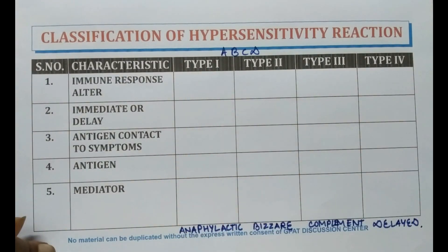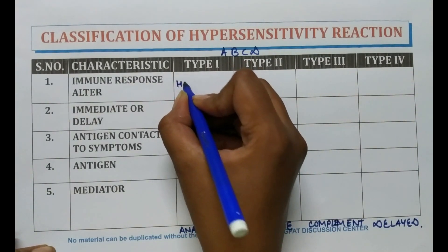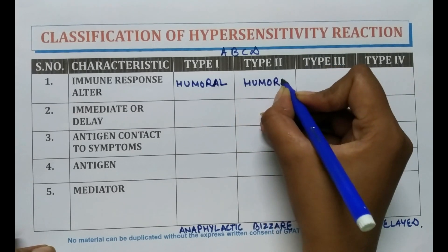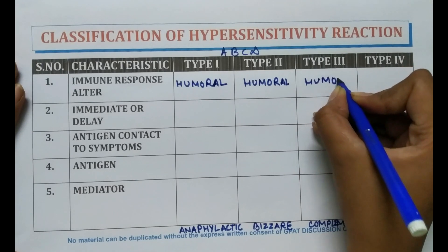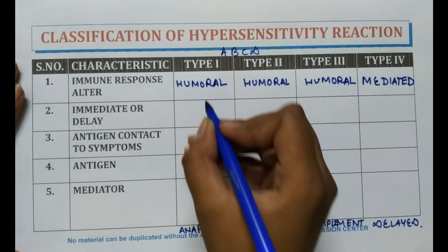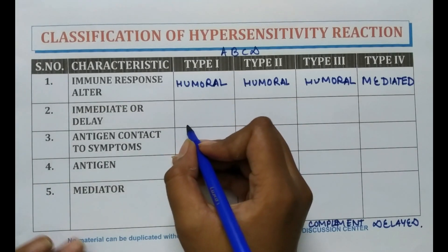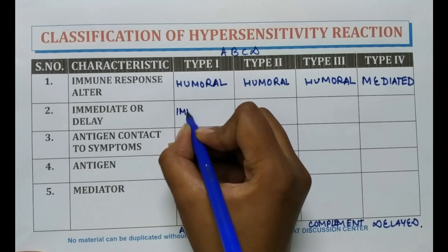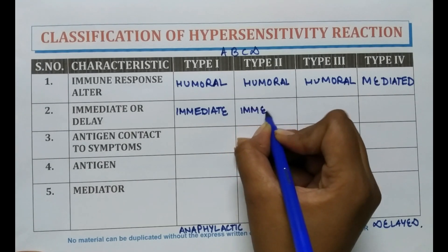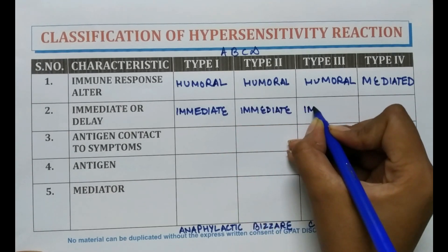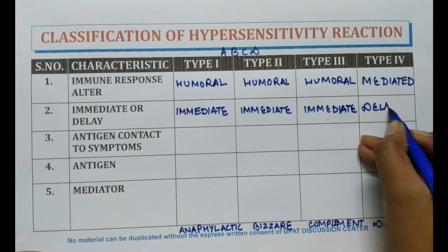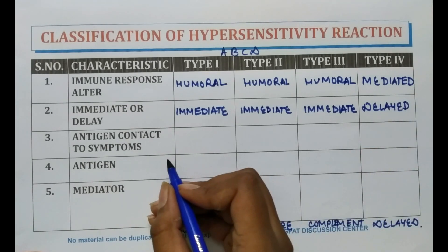In Type 1 hypersensitivity reaction, humoral type of immune response is altered — same for Type 2 and Type 3. In Type 4, cell-mediated type of immune response is altered. The response in Type 1 hypersensitivity is immediate, same for Type 2 and Type 3. In Type 4 reaction, the response is delayed — that's why it is also known as delayed type of hypersensitivity reaction.